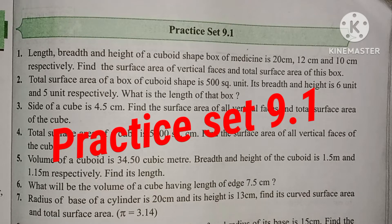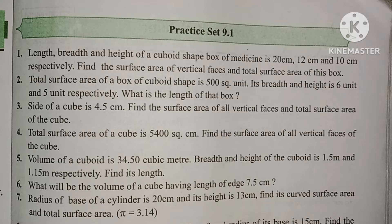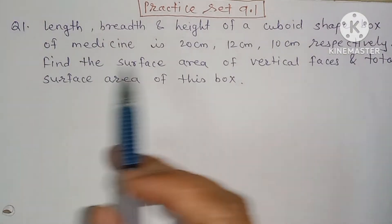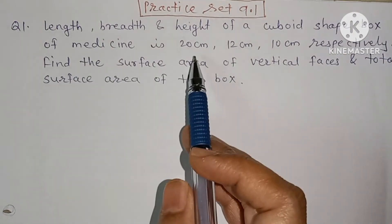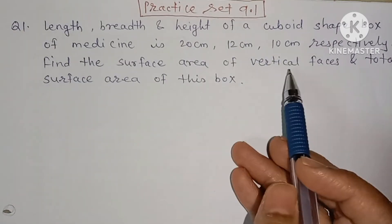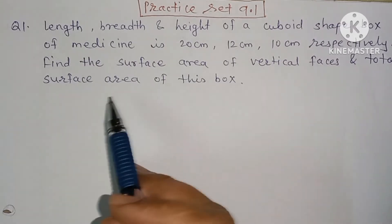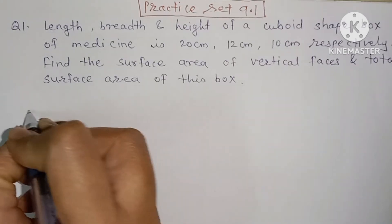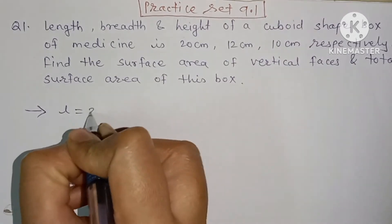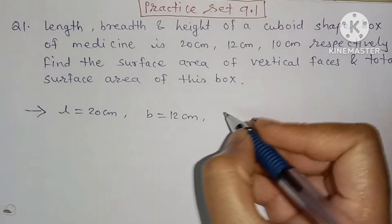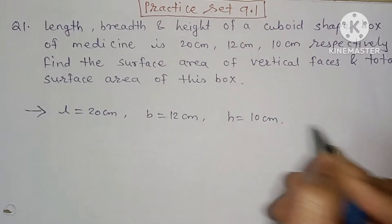Welcome to the Adwaiti education channel. Today we are going to solve practice set 9.1. The length, breadth and height of a cuboid-shaped box of medicine are 20 cm, 12 cm and 10 cm respectively. So: l = 20 cm, b = 12 cm, h = 10 cm.